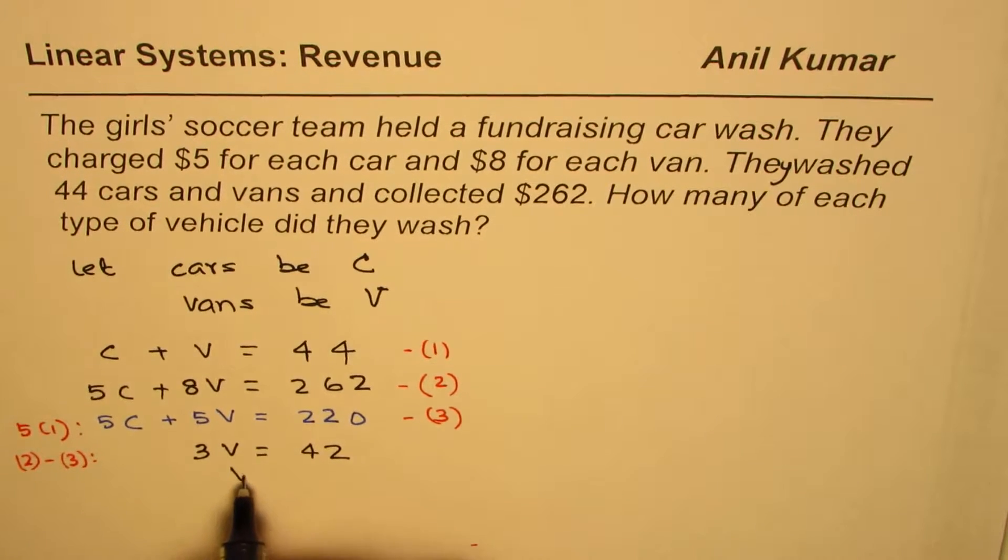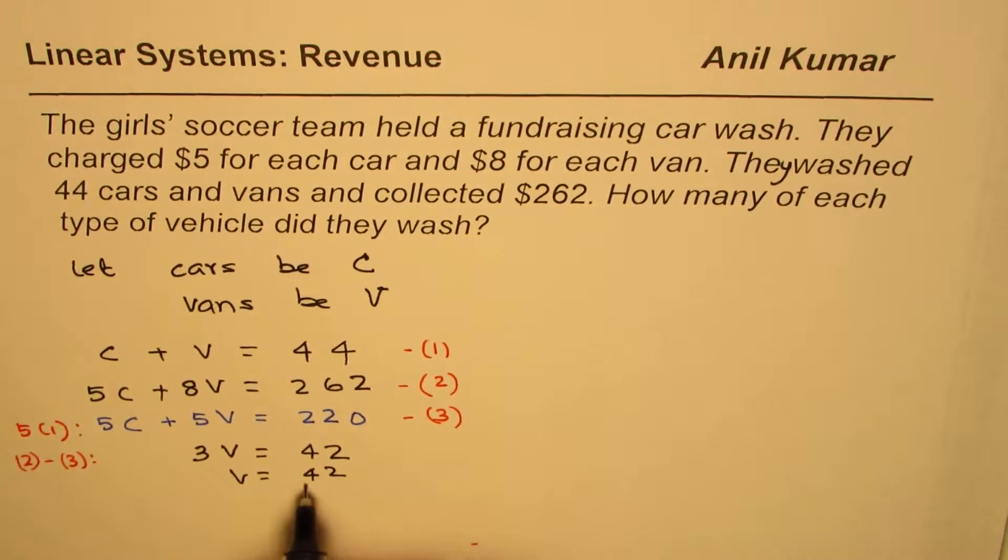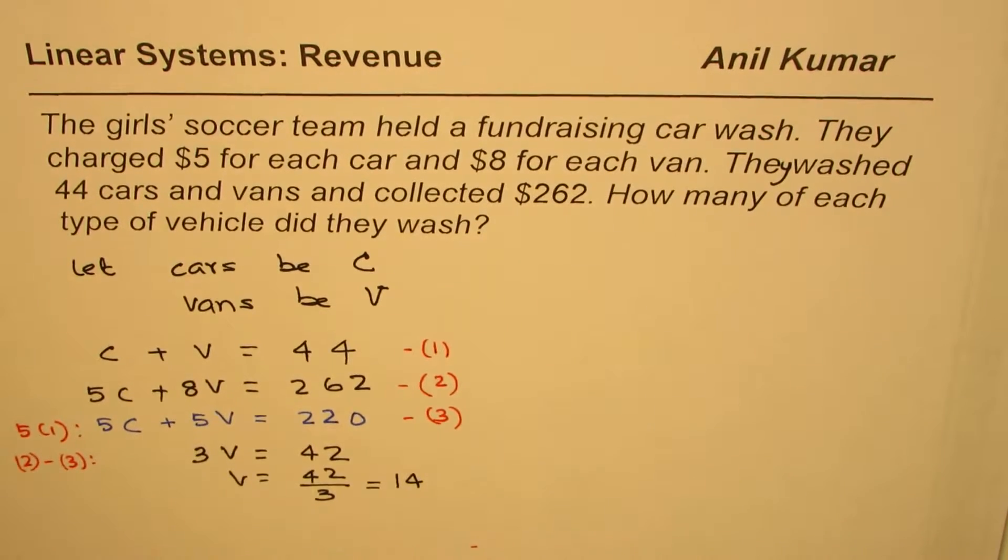Now divide by 3. 42 divided by 3 equals 14. That means 14 vans.